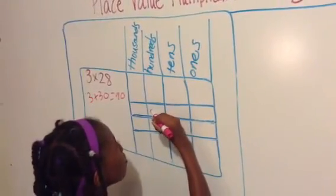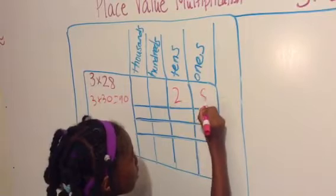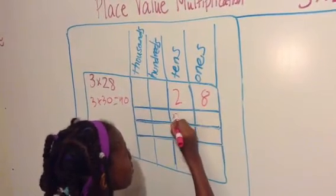The 2 is in the tens place, and the 8 is in the ones place. We're going to be multiplying everything by 3.